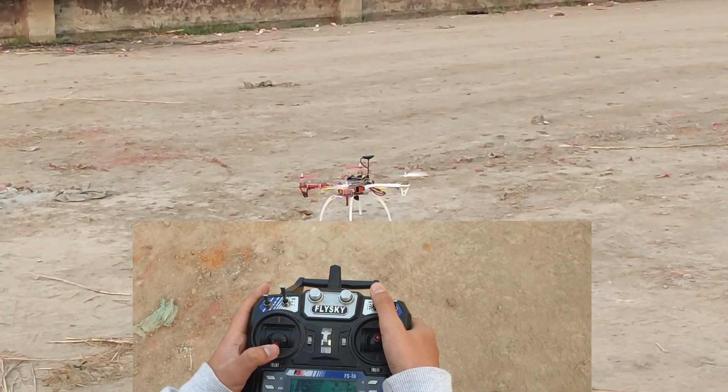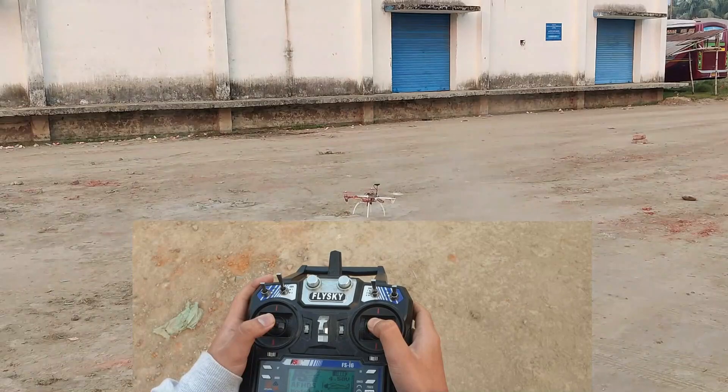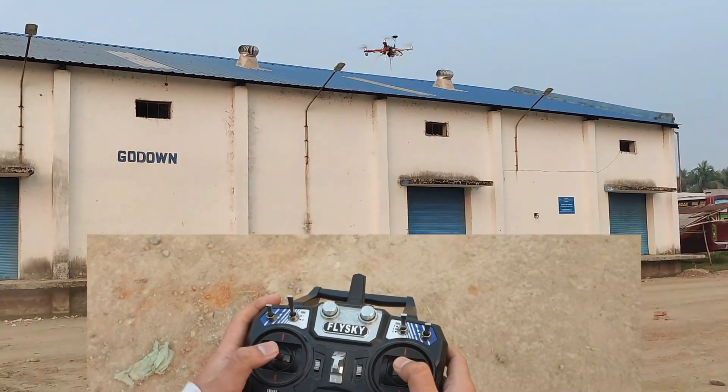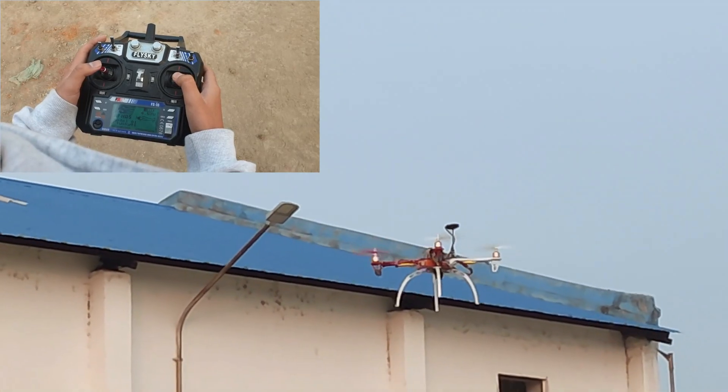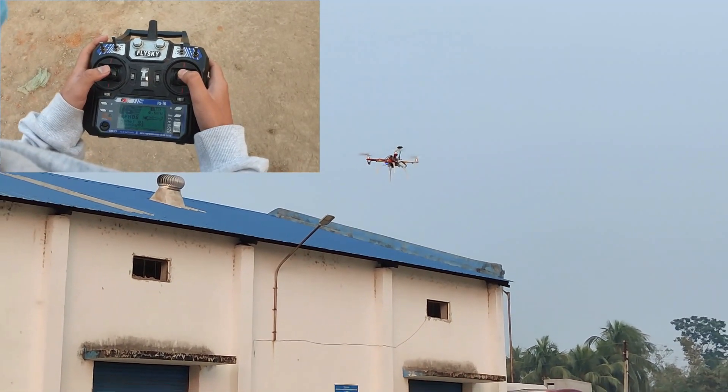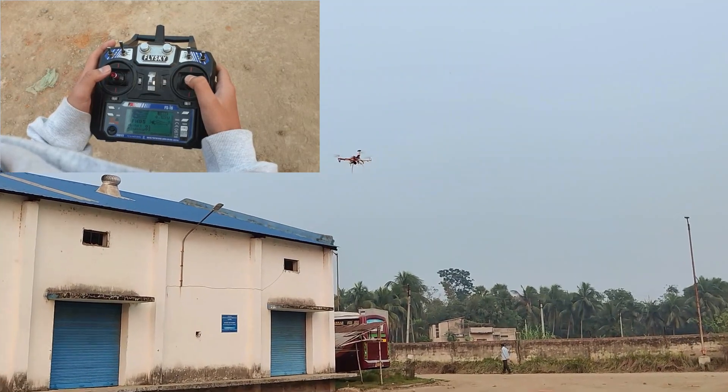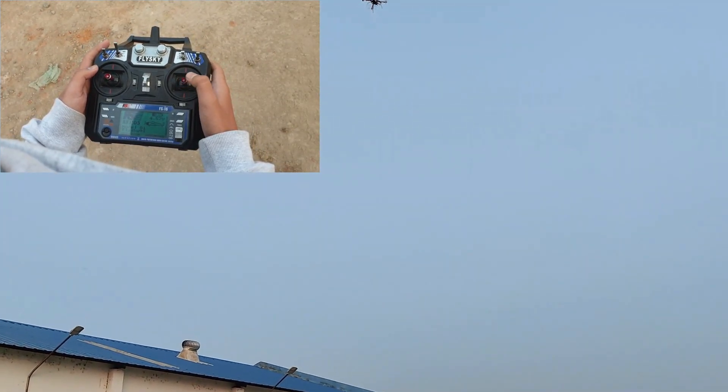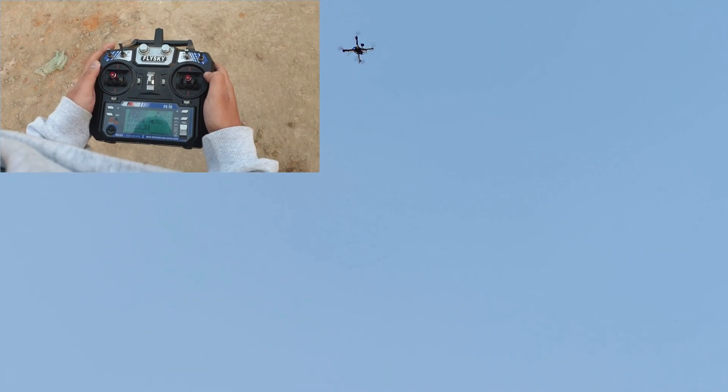Now I convert it from stabilize mode to loiter mode. In this mode you have to pull up your throttle stick to 50%, and if you push slide up from 50% it will take off. After getting a required height, bring the stick again to the 50% and it will remain the position. It will fly up to 20 meters upwards and then it will land from its flight location.